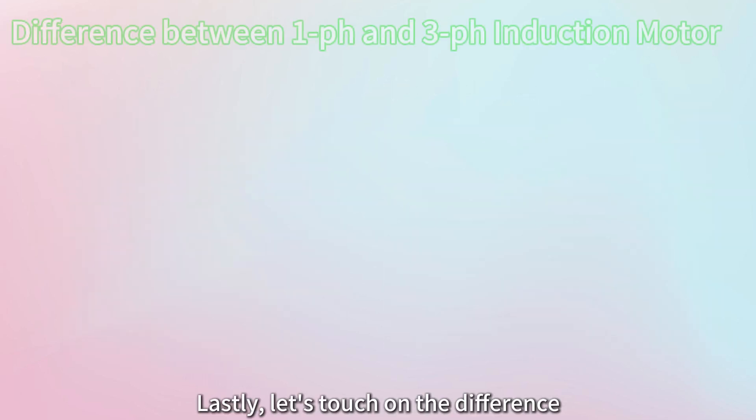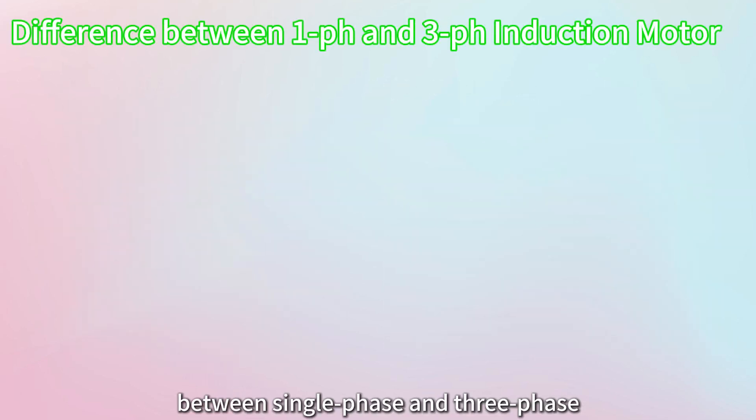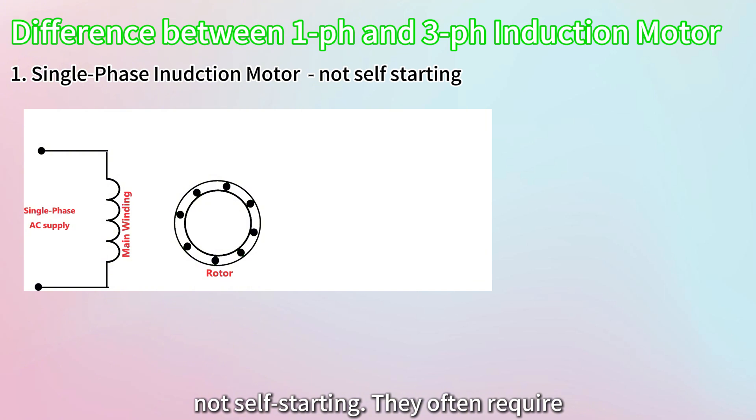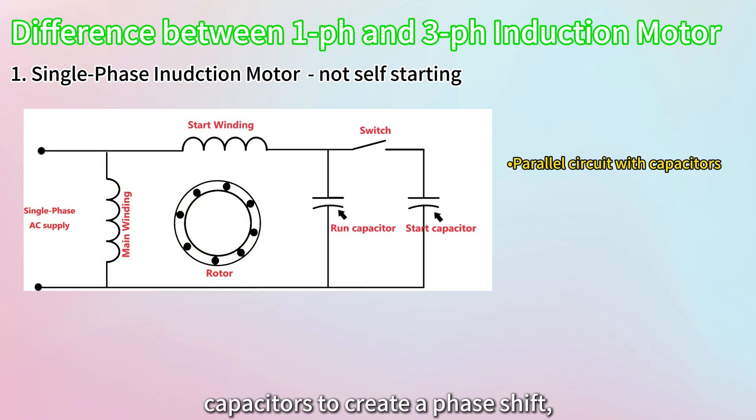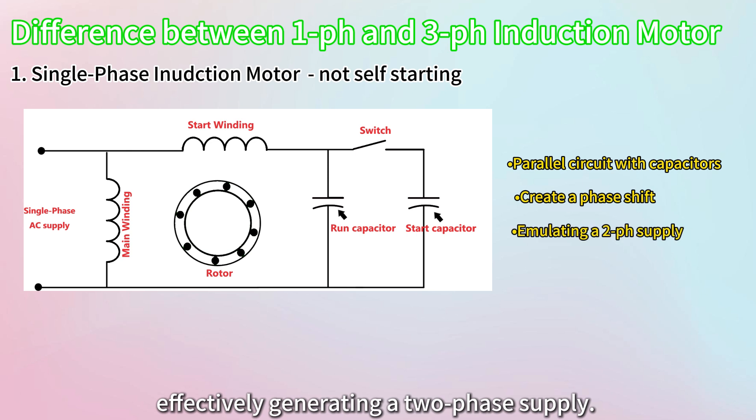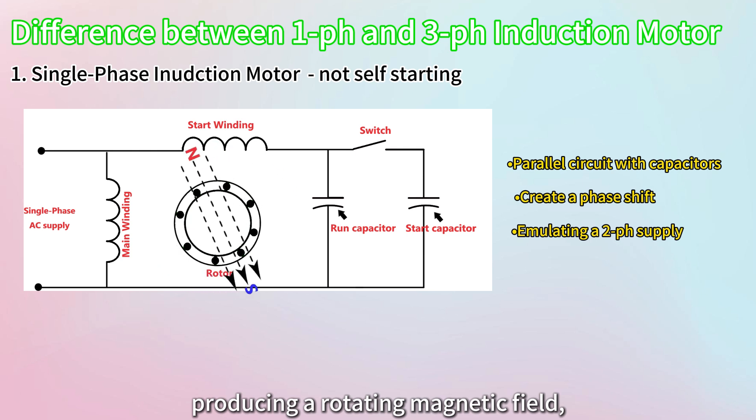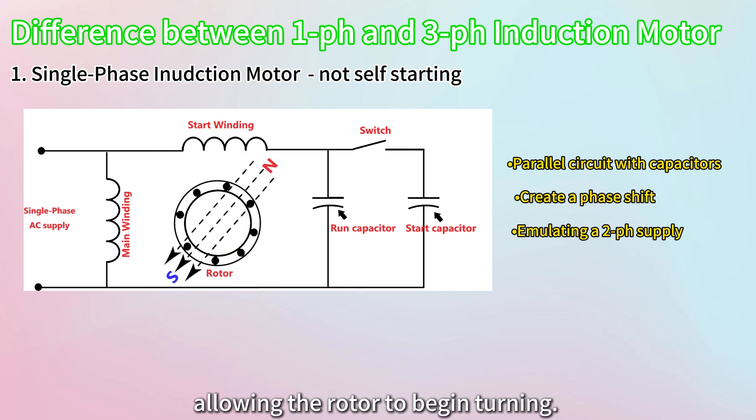Lastly, let's touch on the difference between single-phase and three-phase induction motors. One key distinction is that single-phase induction motors are not self-starting. They often require capacitors to create a phase shift, effectively generating a two-phase supply. This phase shift is crucial for producing a rotating magnetic field, allowing the rotor to begin turning.